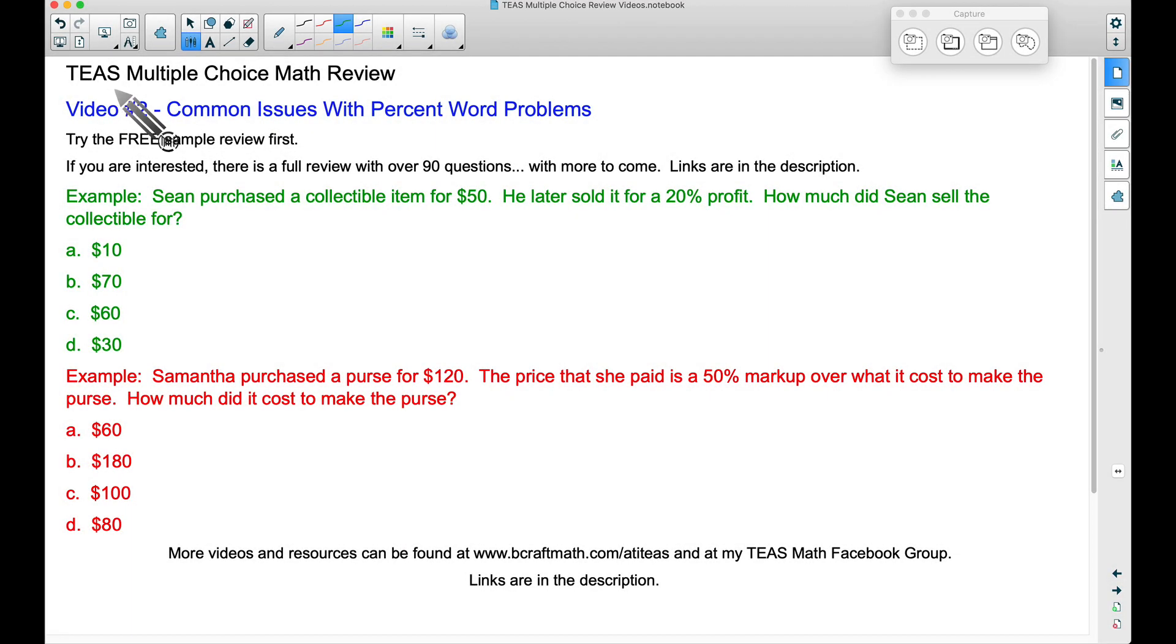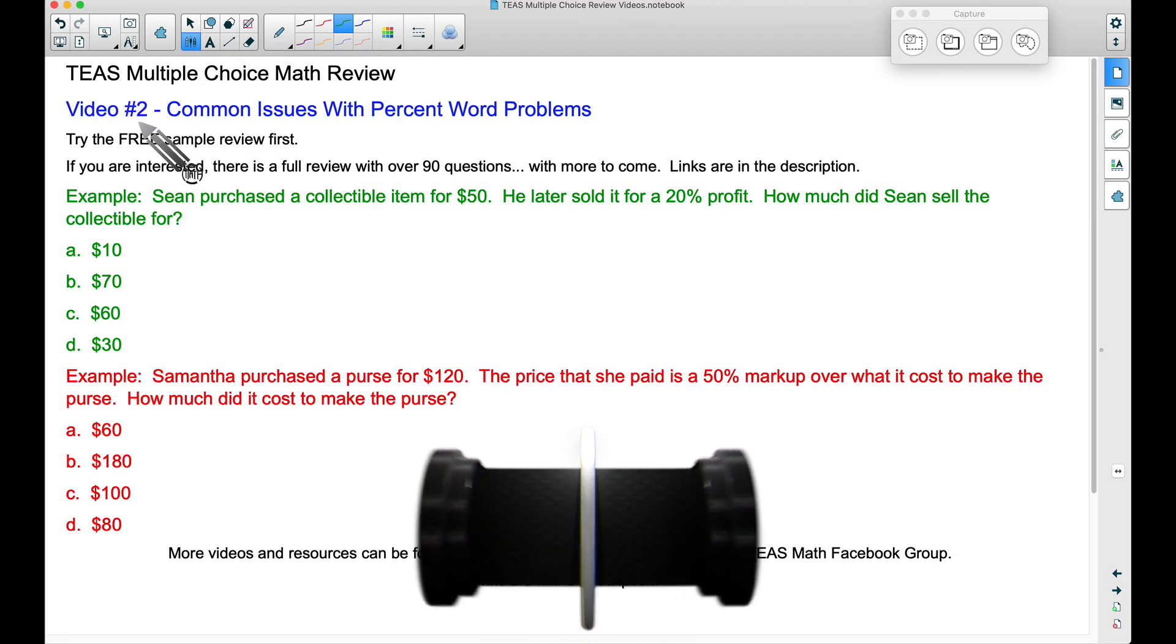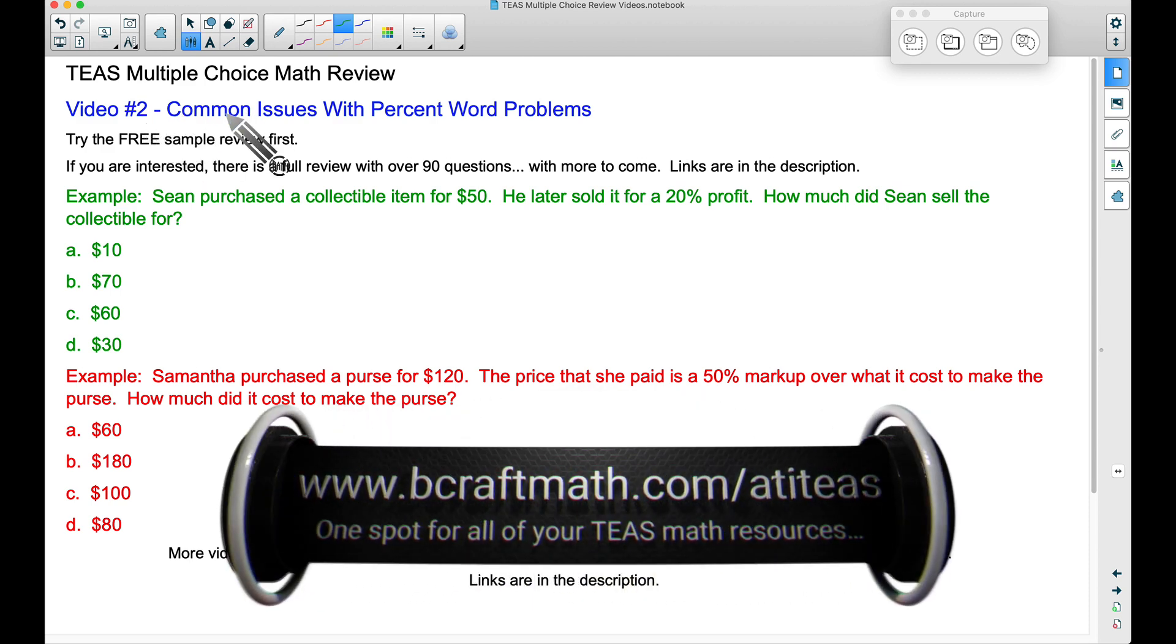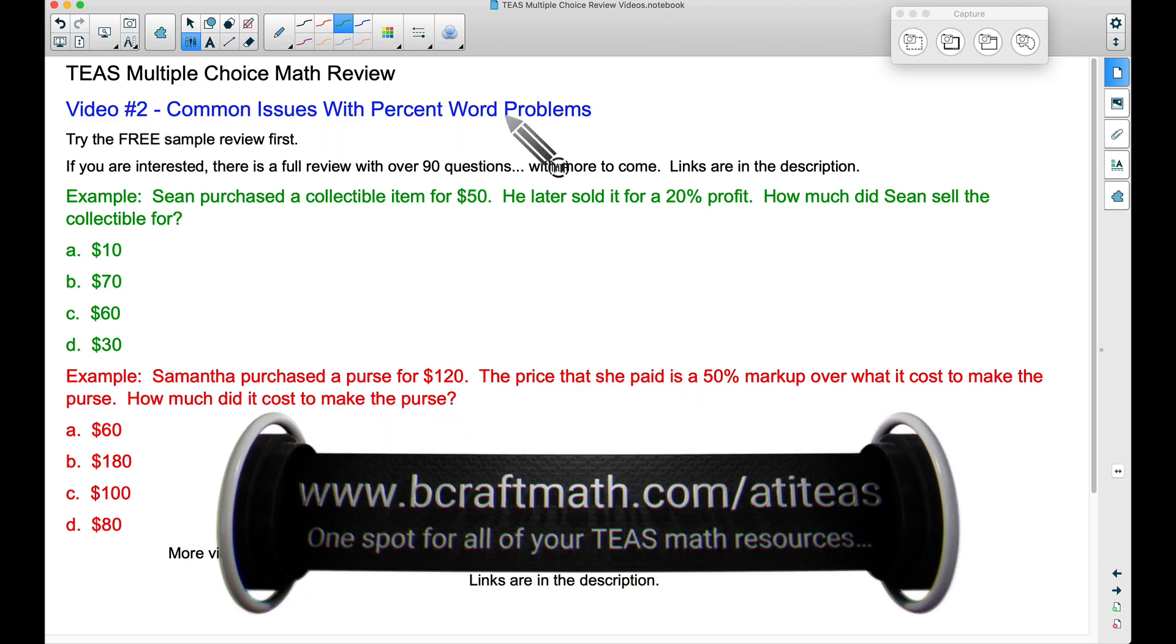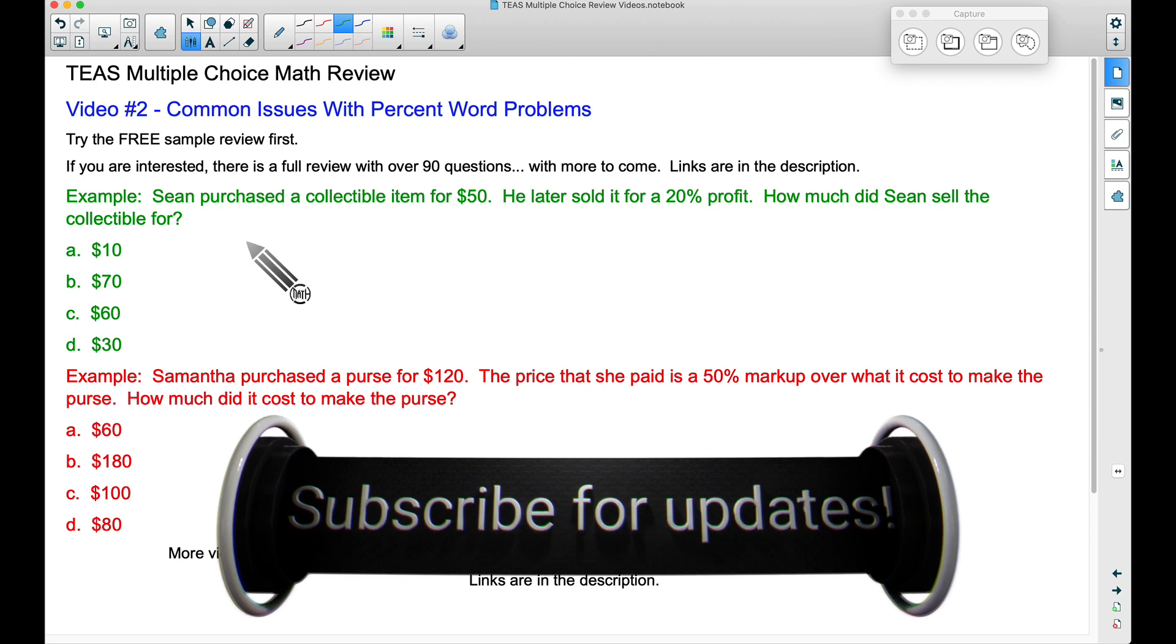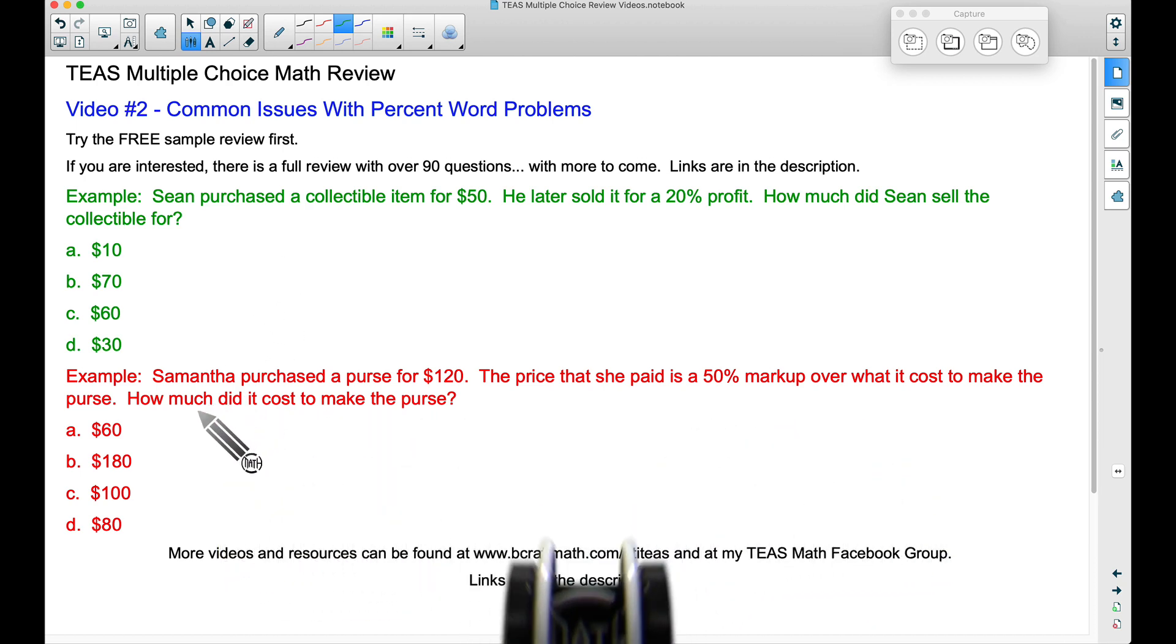All right, in this video this is TEAS multiple choice math review video number two and we're going to talk about some common issues with percent word problems. The green example most people can get right but this red example is where I see students make mistakes very often and I want to talk about that in this video.